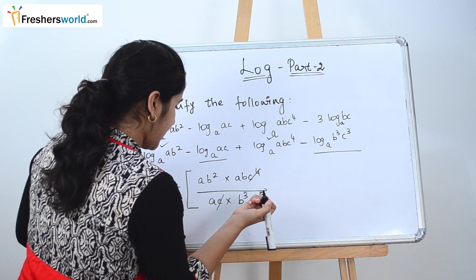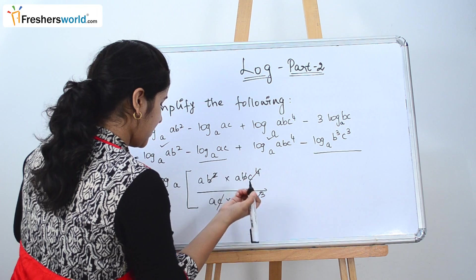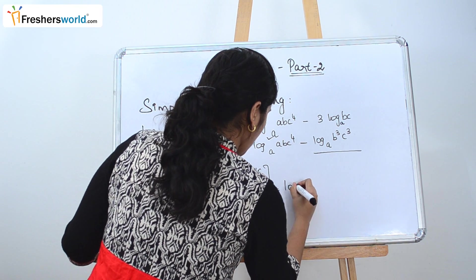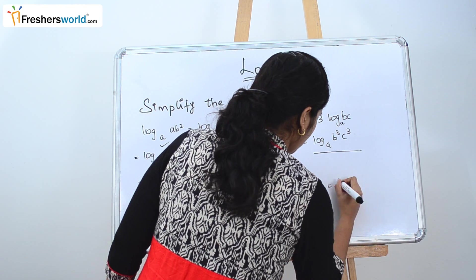So c⁴ gets cancelled, b³ gets cancelled, a gets cancelled. So what do we get here? log_a(a), which is nothing but 1.